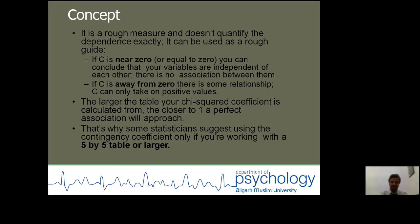As a guide, if C is near zero or equal to zero, you can conclude that your variables are independent of each other — there is no association between them. If the contingency coefficient is away from zero, there is some relationship. The contingency coefficient can only take on positive values.